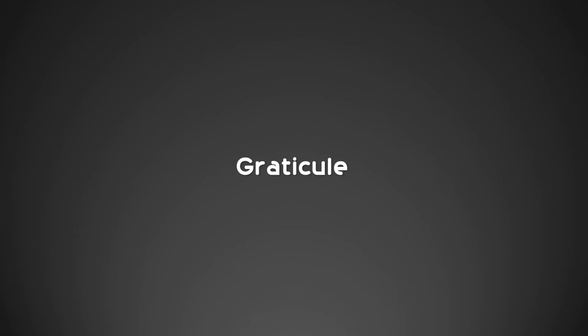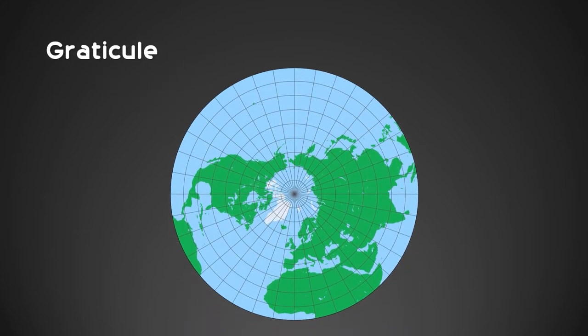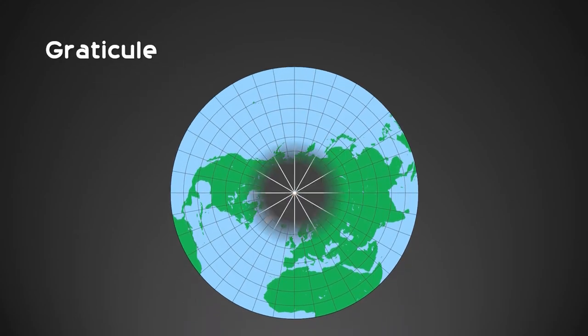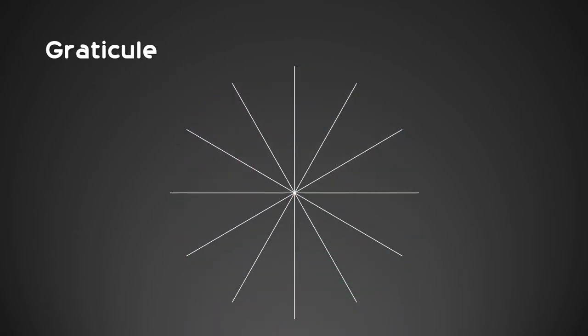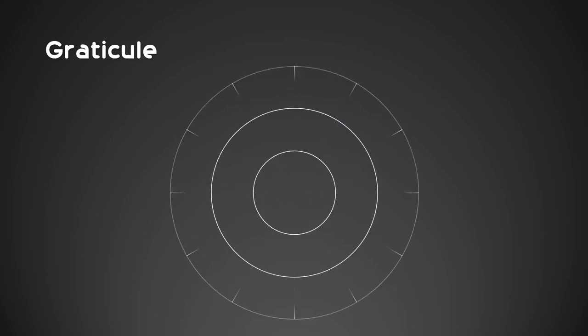Graticule. Meridians are straight lines originating from the pole. Parallels of latitude are arcs of circles centered at the pole.